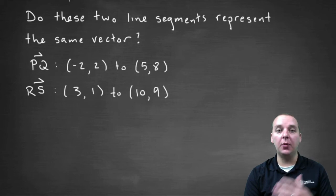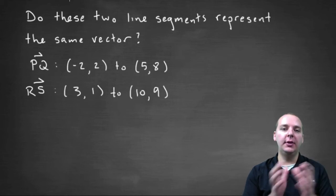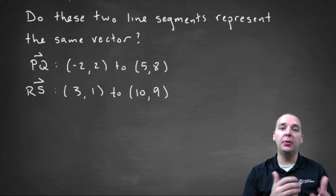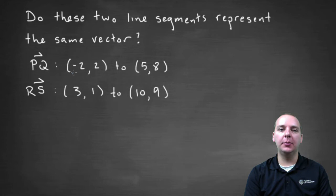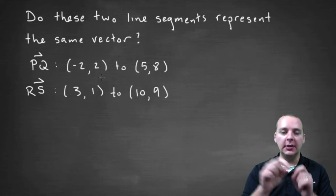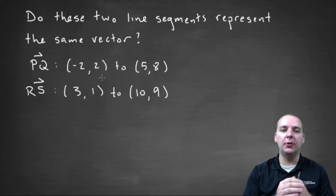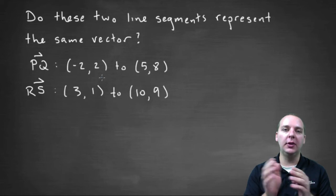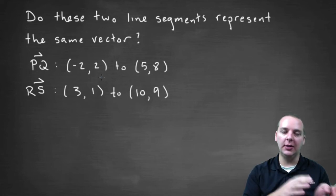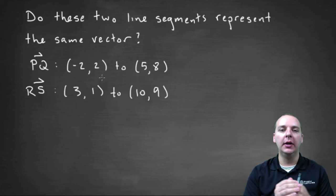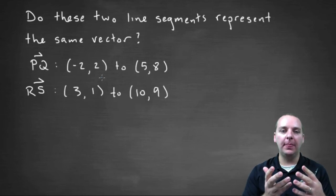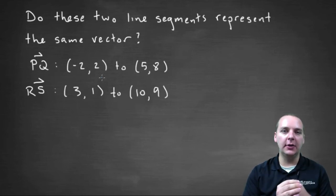A common exercise will ask if two different line segments are represented by the same vector. Here we have line segment PQ from negative two, two to five, eight, which has a certain direction and magnitude. Then we have line segment RS from three, one to ten, nine — initial point to terminal point. How do we tell if these are represented by the same vector?